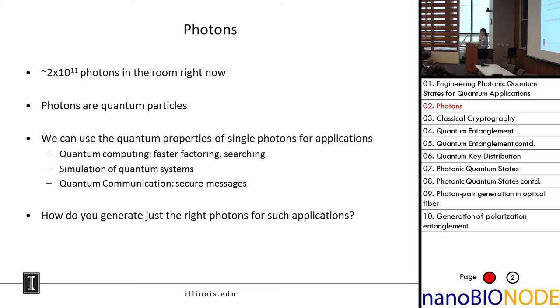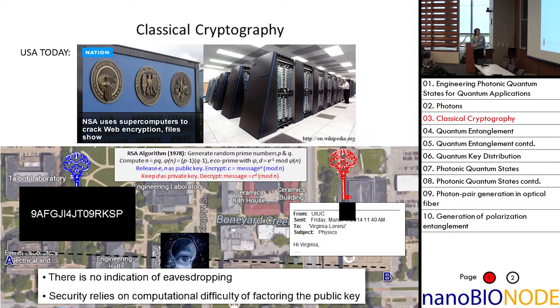The question is, how do you generate just the right photons for these applications? It's easy to provide motivation for using photons for new types of communications. Based on the news nowadays, for example this headline from USA Today: the NSA uses supercomputers to crack web encryption files. Clearly there's something wrong with the current way that we send secret messages.